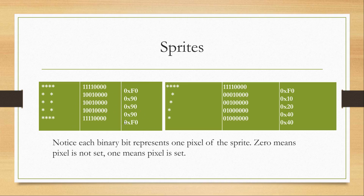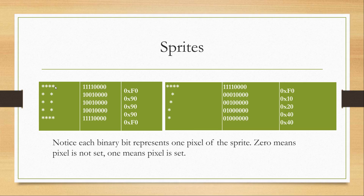Here are sprites in the Chip 8 for the number 0 and the number 7. To the right is hexadecimal, in the middle is binary, and on the left is a character equivalent. Notice that 1 means the pixel is on and 0 means the pixel is off. So if we look at the first row, we see 1, 1, 1, 1, and the character equivalent shows four asterisks. The final four bits are 0, so if they were all 1 we'd see 8 characters on the first row instead of 4.